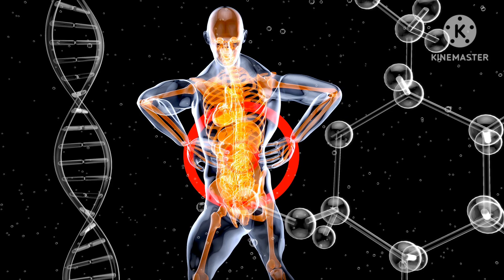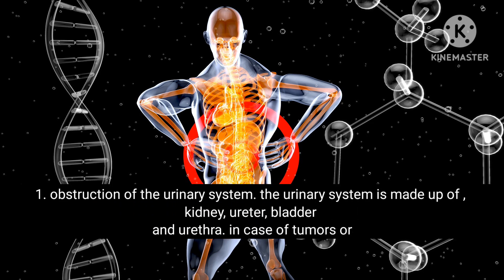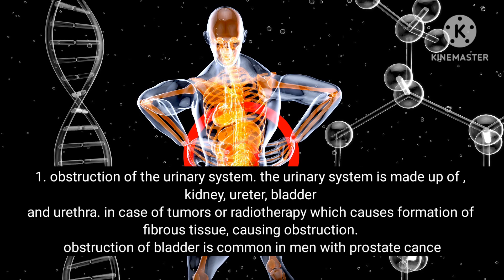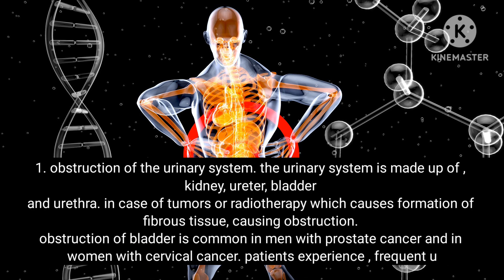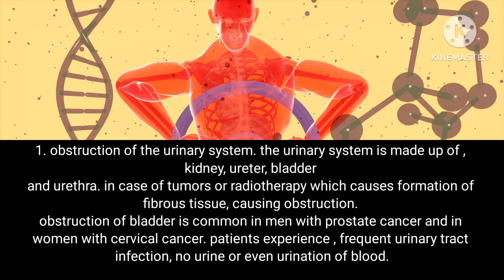Pain on the lower back between the ribs and pelvis is called flank pain. Below are 14 conditions that can cause flank pain. First, obstruction of the urinary system: the urinary system is made up of the kidney, ureter, bladder, and urethra. Tumors or radiotherapy can cause formation of fibrous tissue leading to obstruction. Obstruction of the bladder is common in men with prostate cancer and in women with cervical cancer. Patients experience frequent urinary tract infection, no urine, or even urination of blood.